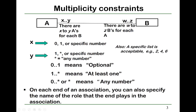In general, we use x..y to represent multiplicity. This means all the numbers from x to y, where x can be zero, one, or a specific number, and y can be one, star, or a specific number. Note that we cannot write 0..0, which would mean that for any instance of B, no instance of A has any relationship with it — that's meaningless.